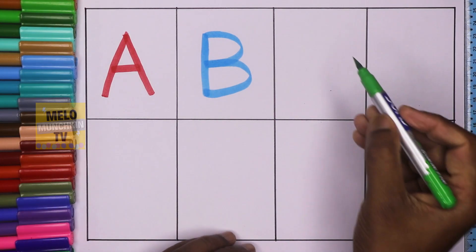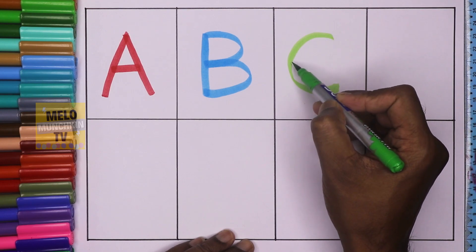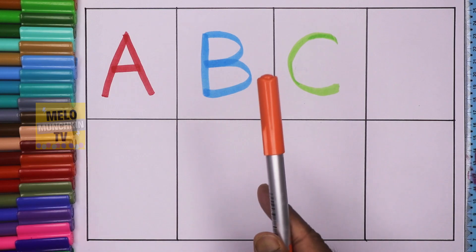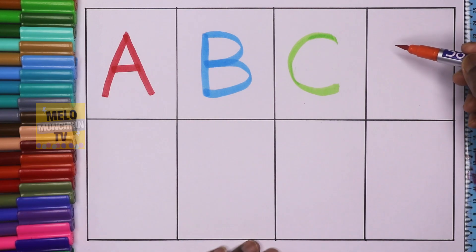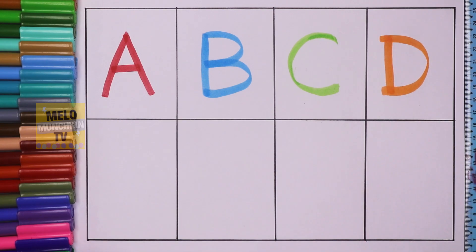Green color. C. C for cat. Orange color. D. D for doll.